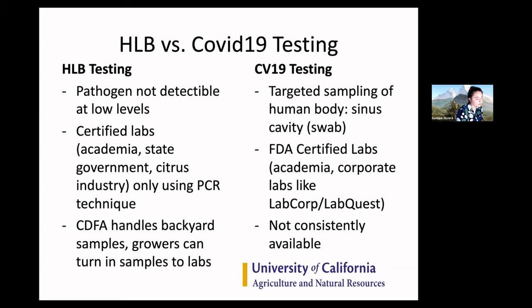One of the biggest challenges with COVID-19 is that testing is not consistently available and the rules are always changing. With the incubation period, if you get tested right after exposure and it comes back negative, that doesn't mean you'll be negative two weeks from now. It really is a challenge without consistent access to testing — and that was also true in the beginning with HLB. It takes governments a lot of time to establish testing regimes and get them widely available to most of the public.